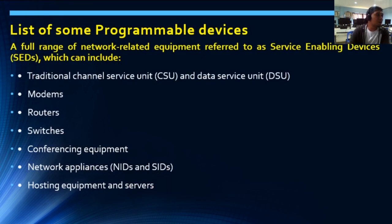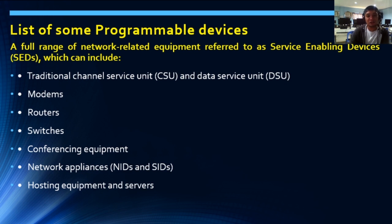The list of programmable devices: the full range of network-related equipment referred to as service-enabling devices, or SED, includes the traditional channel service unit or CSU, the data service unit, modems, routers, switches, conferencing equipment, network appliances, and hosting and servers. These are considered programmable devices and you will encounter them in the subject platform technologies.